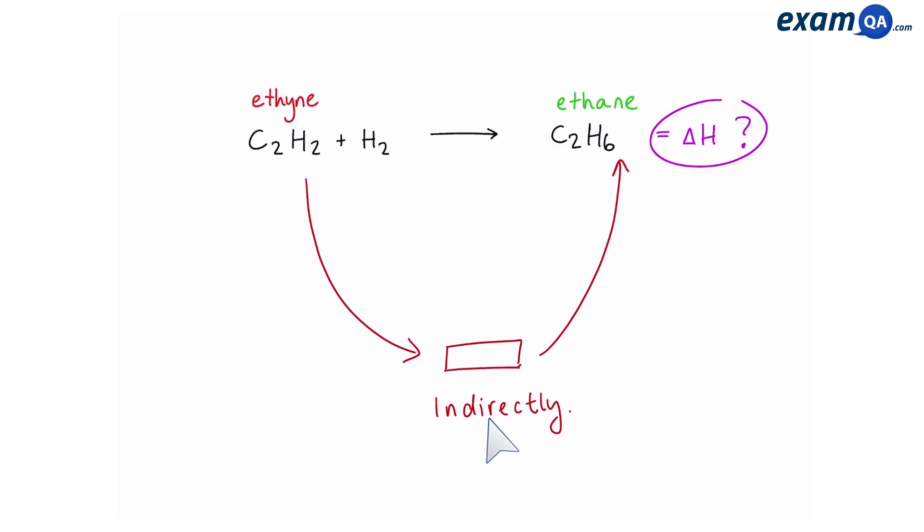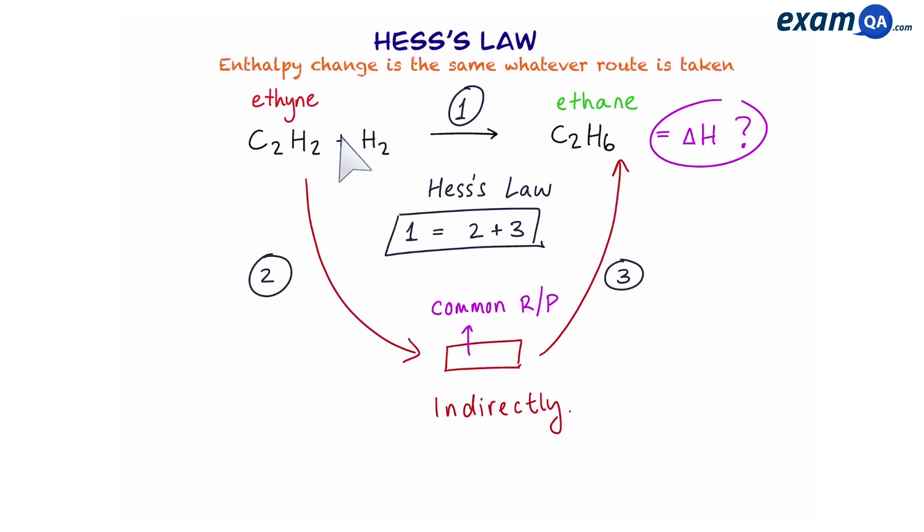Hess's law is there. If a reaction cannot be worked out directly, such as this example, we can work it out indirectly by using a common reactant or product that both the reactants and product in the top reaction share. So if we now label this reaction as reaction 1, our main reaction that we want to work out, and this one as 2 and this one as 3, we can say, and this is the only time you can say, that 1 is equal to 2 plus 3. Hess's law states that the enthalpy change is the same regardless of route taken. So if you can't work it out directly, you can just work it out indirectly, and it should be the same value.